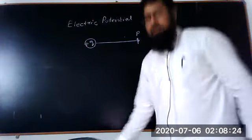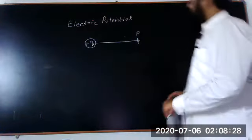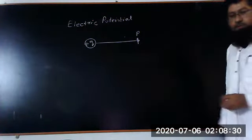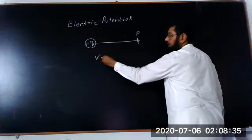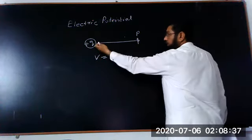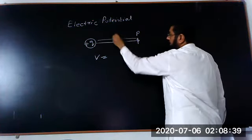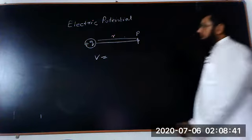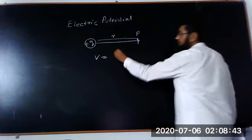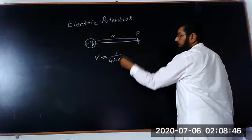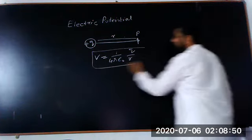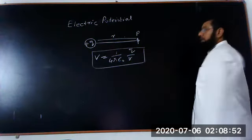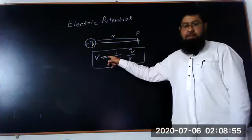Now we are discussing the electrical potential. The electrical potential is simply defined as the work done per unit charge. We have calculated in the last lecture that potential V due to the point charge Q at a distance R. The electric potential is equal to 1 upon 4 pi epsilon naught, Q upon R. This is the electrical potential at point P.